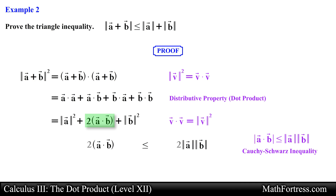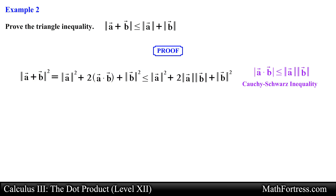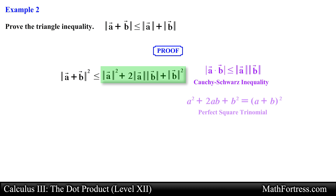We already know that the dot product between two vectors is less than or equal to the product of the vector's magnitudes. So if we multiply both sides of this inequality by two and add the magnitude of vector A squared and the magnitude of vector B squared to both sides, we obtain an equivalent inequality. Now we replace the left side with the magnitude of vector A plus vector B squared. Notice that the right side of the inequality has terms that resemble a perfect square trinomial, so we rewrite it as the quantity of the magnitude of vector A plus the magnitude of vector B, squared.